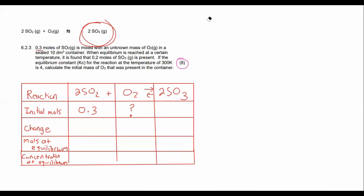In a sealed 10 decimeter container. And then when they don't give you any of this one because it's a product, for the initial remember we can always make that a zero. Then they tell us that at equilibrium it is found that we have 0.2 moles of SO3.